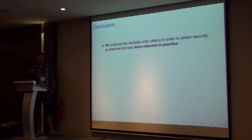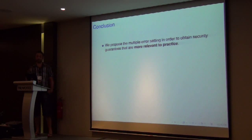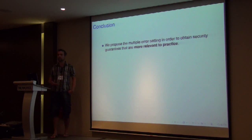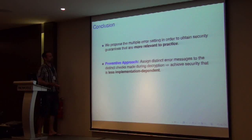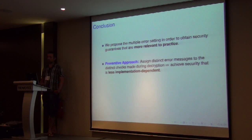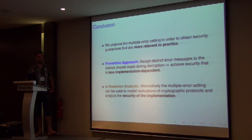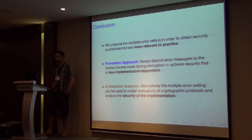In summary, we proposed the multiple errors setting in order to account for distinguishable decryption failures in our security models. This ensures that security guarantees are closer to practice and less dependent on implementation. This can be used in two main ways: first, a preventive approach, where when proposing a scheme, we assign different error symbols to each check in the decryption algorithm and prove security under this assumption, making the scheme less implementation-dependent and less prone to insecurity when deployed. Alternatively, we can use it to analyze existing schemes and see if they remain secure when an adversary can distinguish between different decryption failures. Thank you very much.